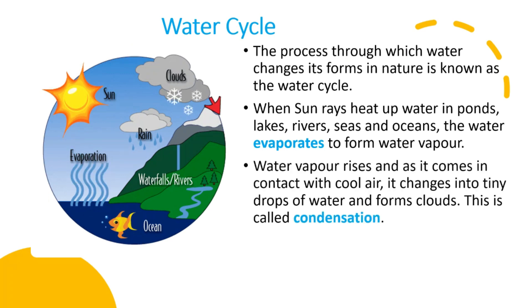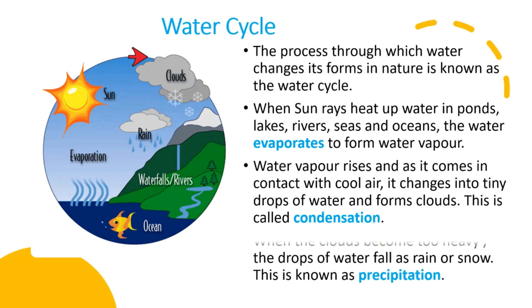Water vapor rises and as it comes in contact with cool air, it changes into tiny drops of water and forms clouds. This is called condensation. When the clouds become too heavy, the drops of water fall down as rain or snow. This is known as precipitation.